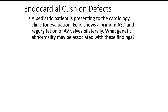A pediatric patient is presenting to the cardiology clinic for evaluation. ECHO shows a primum ASD and regurgitation of AV valves bilaterally. What genetic abnormality may be associated with these findings? The key in this question is going to be recognizing primum ASD as well as this regurgitation of AV valves. Remember that the AV valves are going to be formed from the endocardial cushions, and thus the abnormality is going to be Down syndrome.